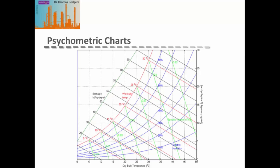Most of these parameters can be read off psychometric charts. Given a dry bulb temperature and a wet bulb temperature, you find the x-axis for the dry bulb temperature and the red lines for the wet bulb temperature. At the corresponding point, you can read off: the specific humidity from the y-axis, the relative humidity from the blue lines, the specific volume from the green lines, and the enthalpy from the dark green lines.